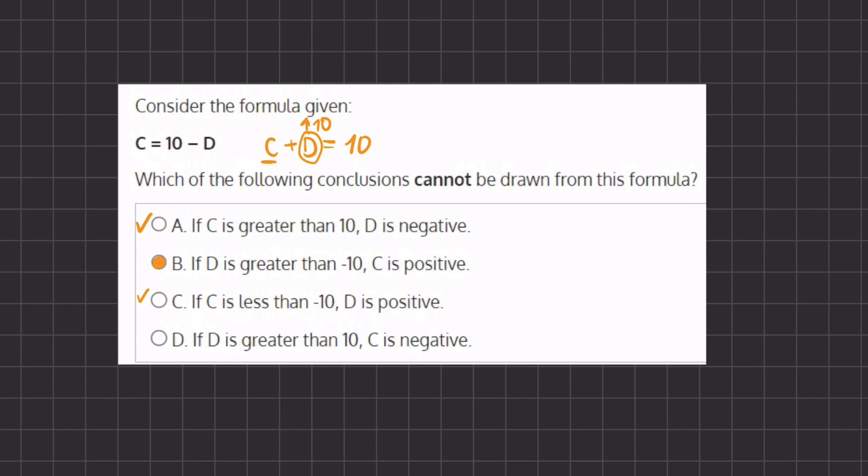c will weigh it down and therefore will be able to equal 10. If c was also positive, c plus d would just be greater than 10, which would be incorrect.